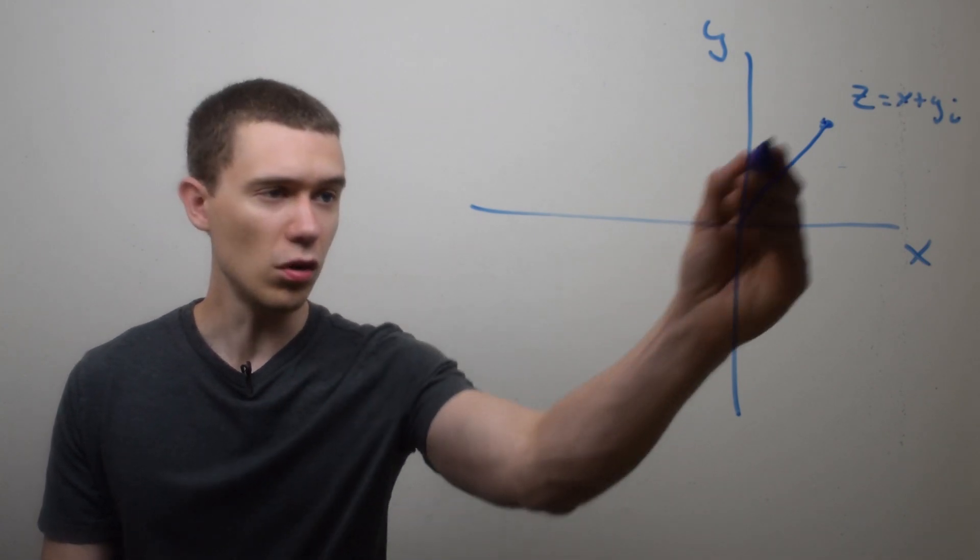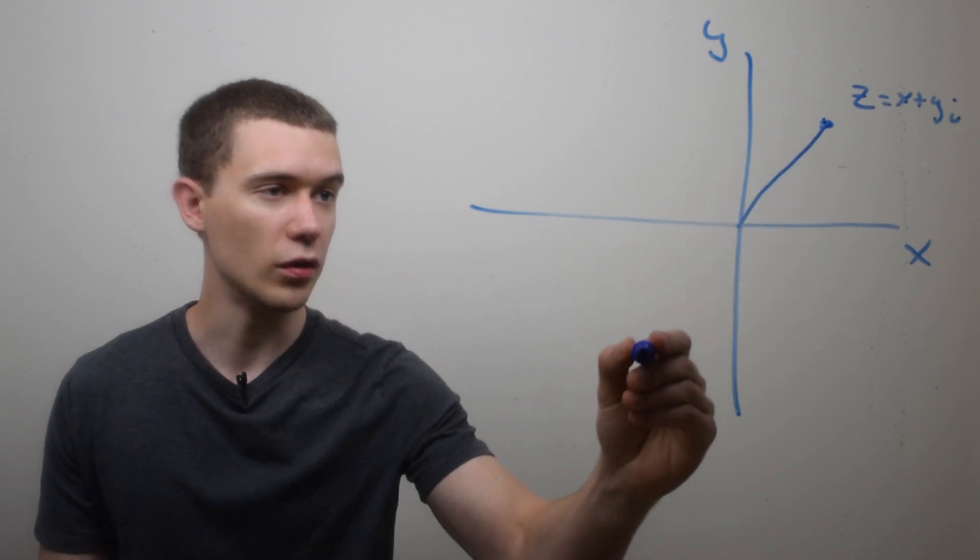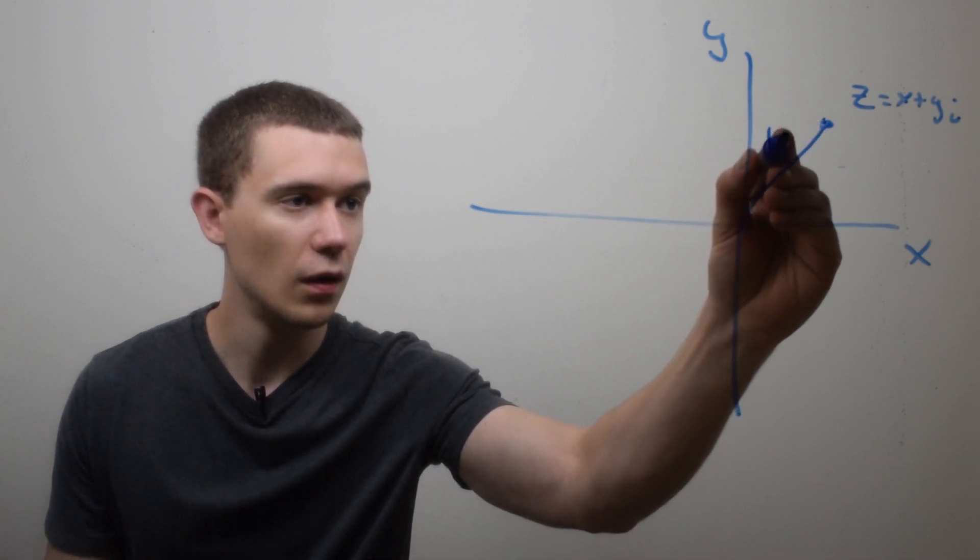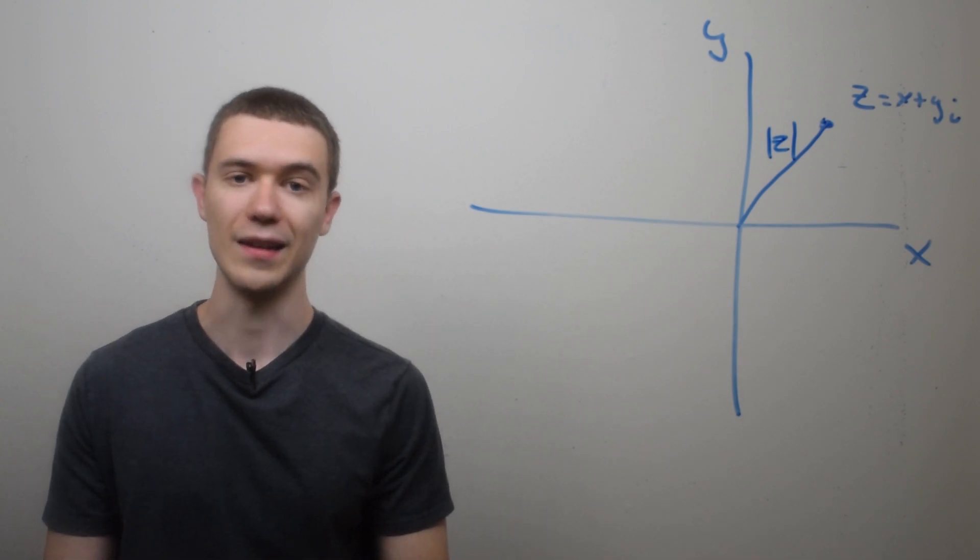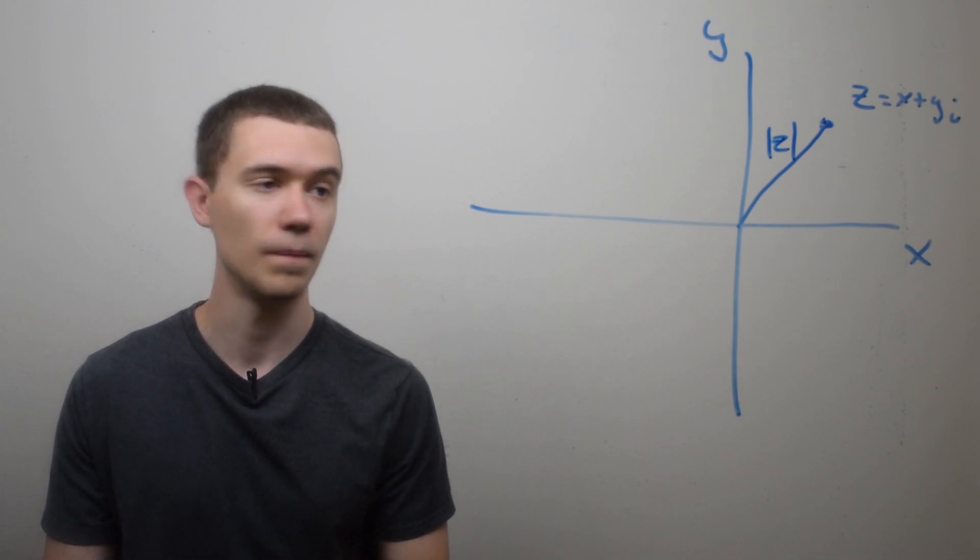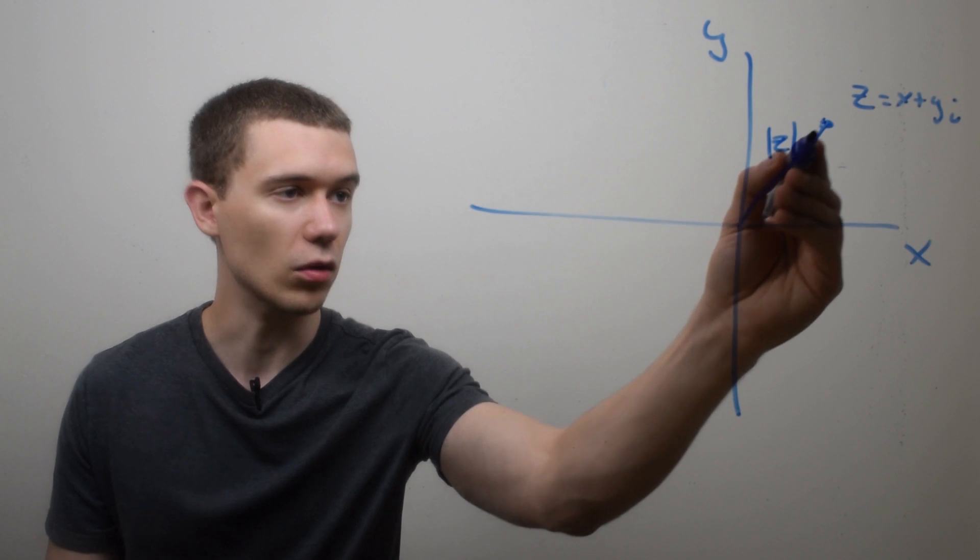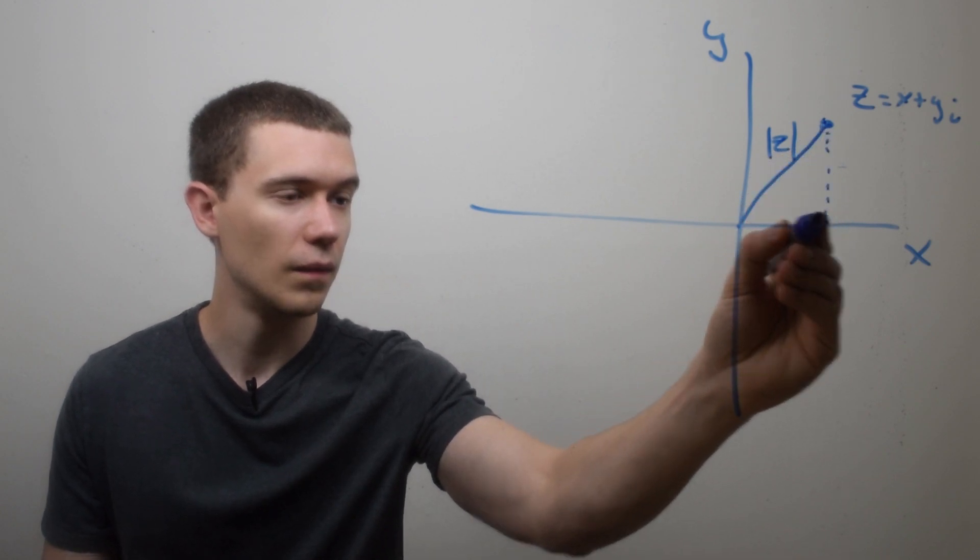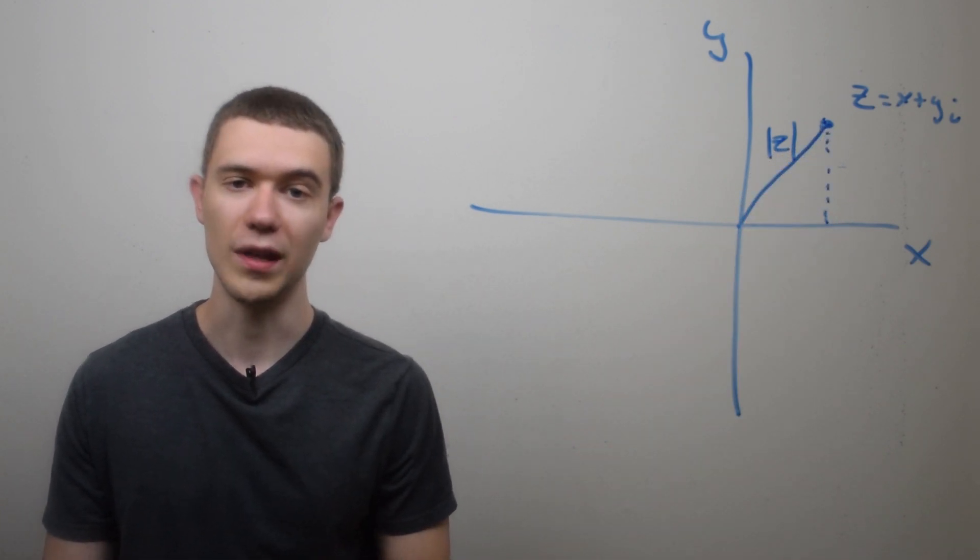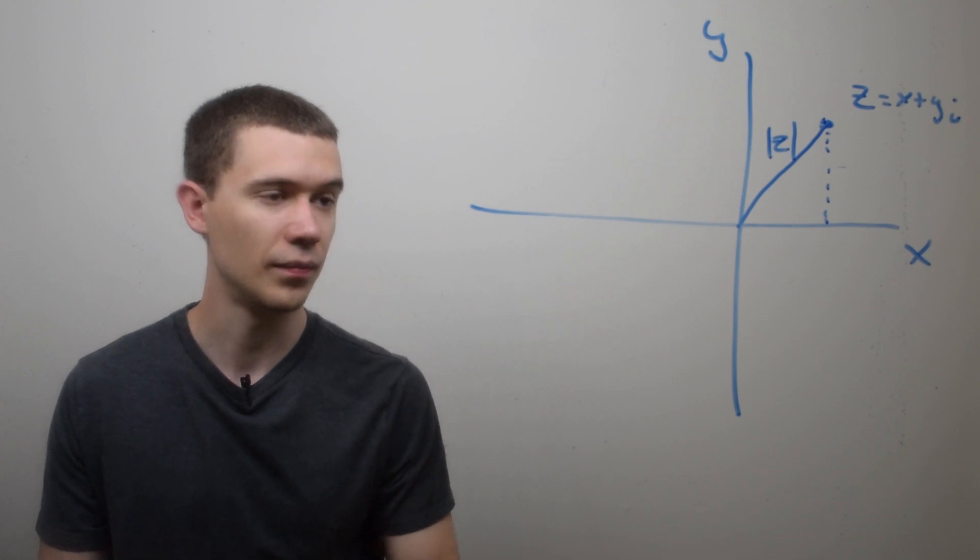So if I draw the distance to the origin, we know this to be the modulus of z, the length of that complex number. And if I draw the triangle by drawing a straight line to the x-axis, well, this first leg of the triangle will represent the x-distance.